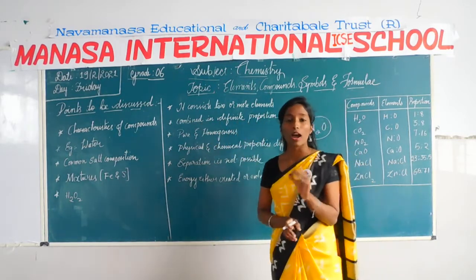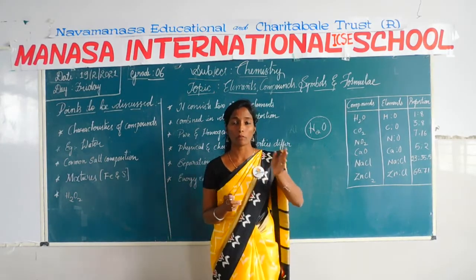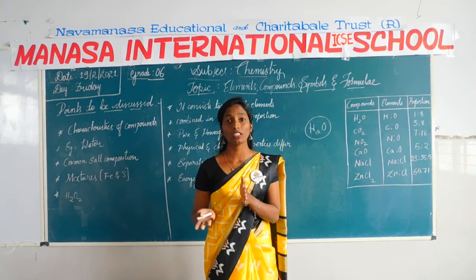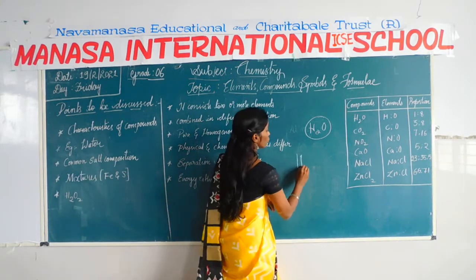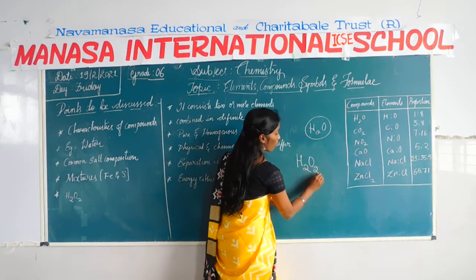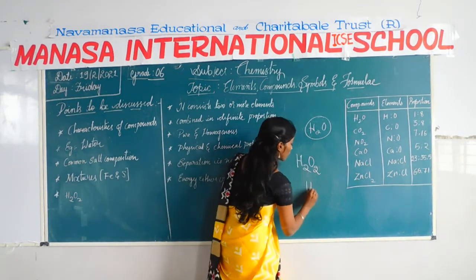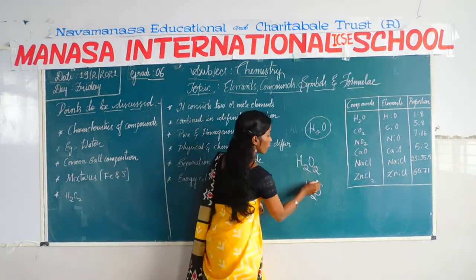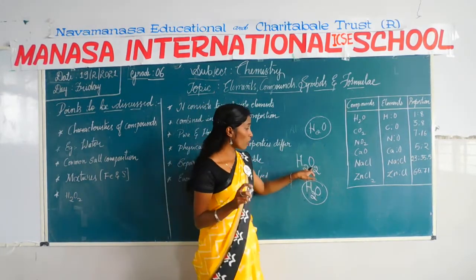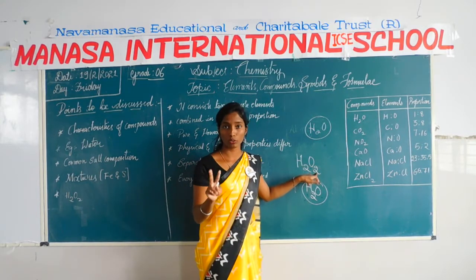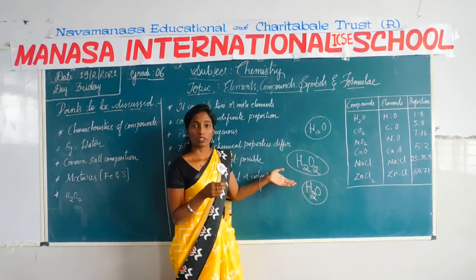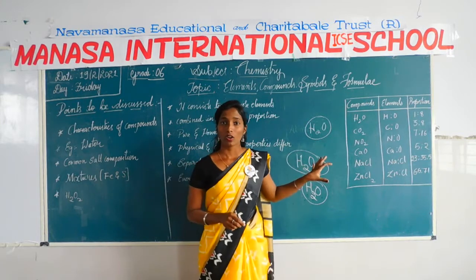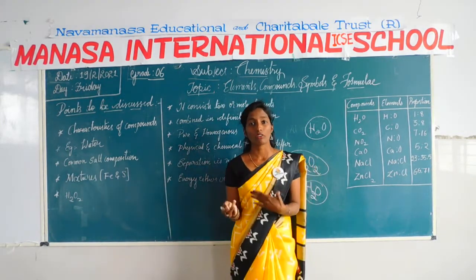The second characteristic: combine in a definite proportion. This means there should be a proper amount of hydrogen and a proper amount of oxygen. If you change the composition it will become another compound. For example, if you take two moles of hydrogen and one mole of oxygen, this forms water. But if in place of one oxygen atom you take two, it will become a completely different compound — hydrogen peroxide. So the definite proportion of a compound is very important.